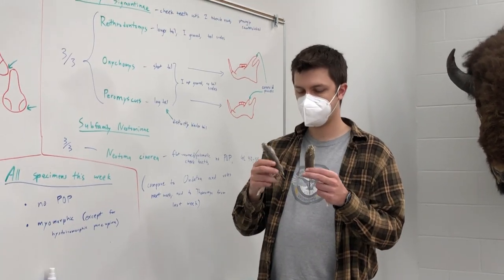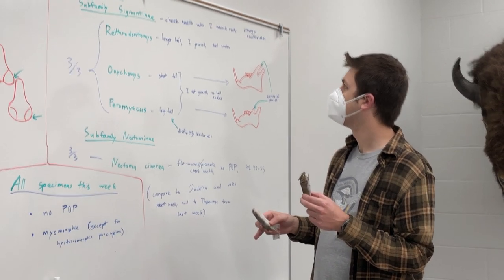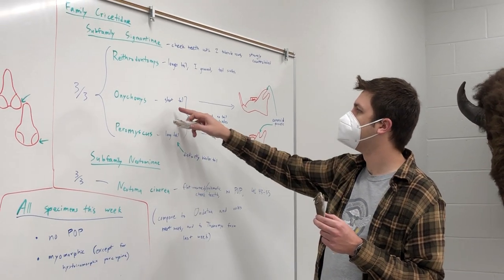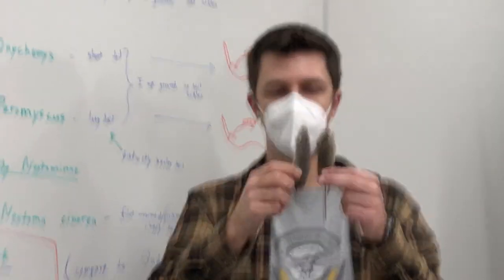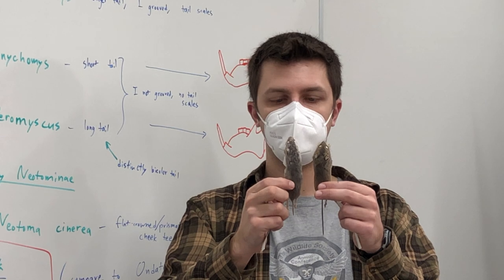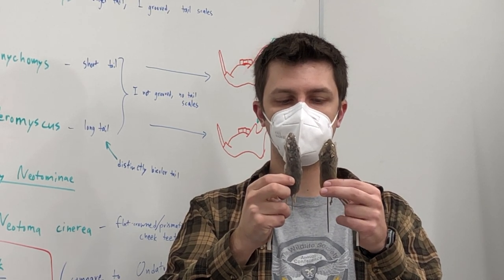Talking about the skins, one way to distinguish them is that Onychomys, this grasshopper mouse, has a much shorter tail than the other two. So you can see just how short this tail is versus the other ones.